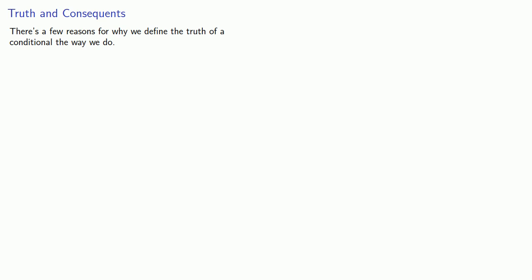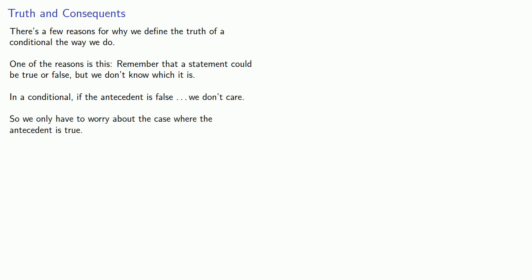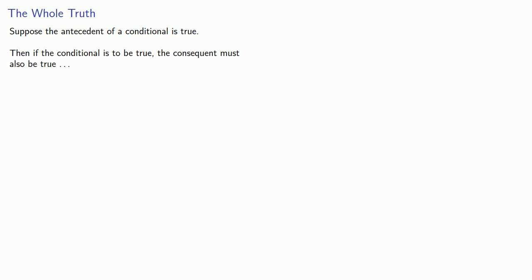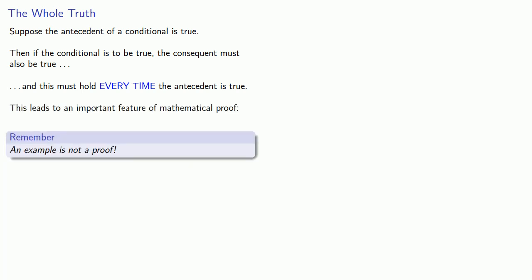This is worth talking about a little more. One reason we define the truth of a conditional the way we do is this: if the antecedent is false, we don't care. We only have to worry about the case where the antecedent is true. If the conditional is to be true, the consequent must also be true, and this must hold every time the antecedent is true. This leads to an important feature of mathematical proof: an example is not a proof, because our statement has to be true every time the antecedent is true.